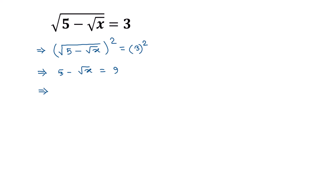Taking this 5 to the right side, we will get negative square root of x is equal to 9 minus 5, which is 4.